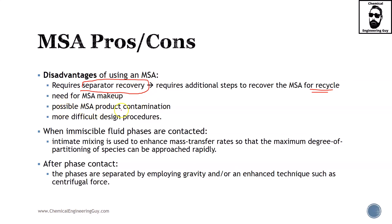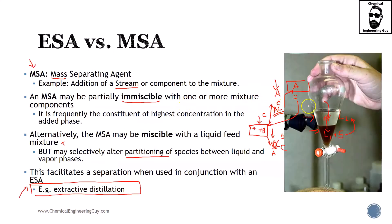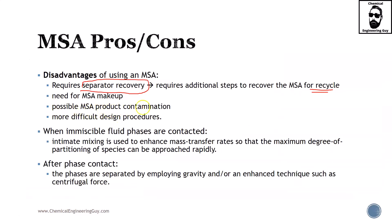You can also get MSA product contamination — as time passes, the C component will be gradually depleting until it no longer works effectively. There is also possible MSA contamination and more difficult design procedures. Almost by definition, if you add one component requiring additional separation technology, you are adding process complexity — not only more complex, but more expensive and more difficult to operate.